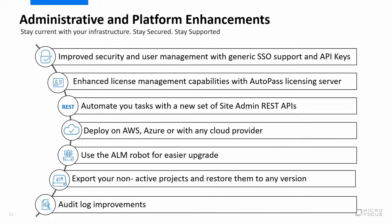ALM is also fully supported with public cloud providers, so you can deploy ALM on any public cloud such as AWS, Azure, or Google Cloud. The ALM robot helps the administrator to perform project upgrades, schedule them, and set a priority. We are also helping you with exporting and archiving your non-active projects with our new archiving wizard. All of that, alongside enhancements to our audit log, improves administration, reduces the total cost of ownership, and significantly improves the security of ALM.